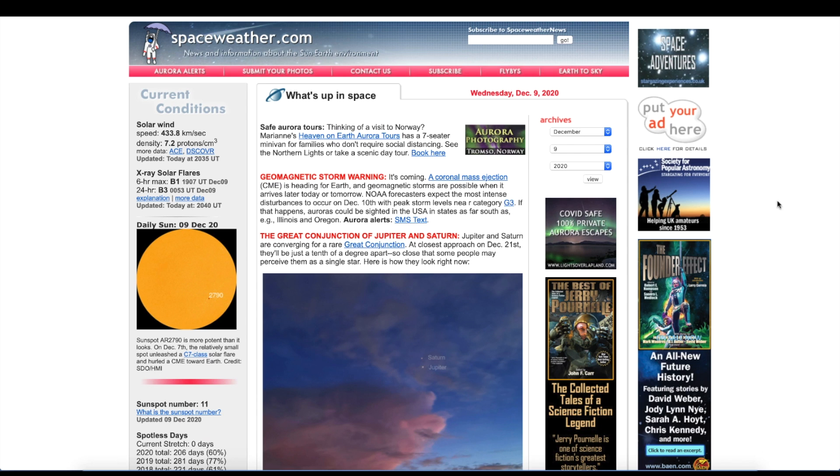According to spaceweather.com, they're saying geomagnetic storm warning. It's coming. A coronal mass ejection (CME) is headed towards Earth, and a geomagnetic storm is possible when it arrives later today—that would be the 9th—or tomorrow on the 10th.